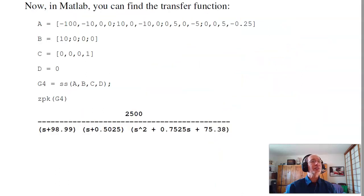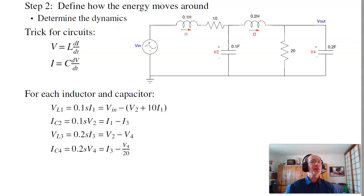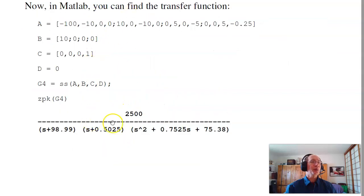Notice this is an advantage of state space. I wanted to find the transfer function for the circuit — if I use the techniques from circuits one or circuits two, it would take me about half an hour. In state space, the equations are pretty straightforward. Once you have MATLAB, finding the transfer function is pretty easy. But you have to use state space to do it that way.